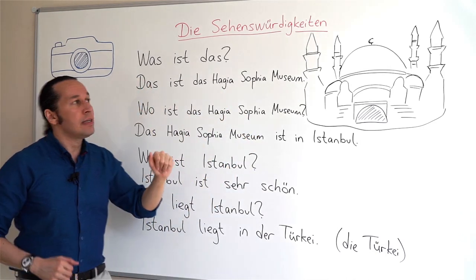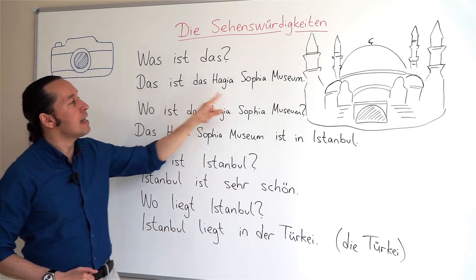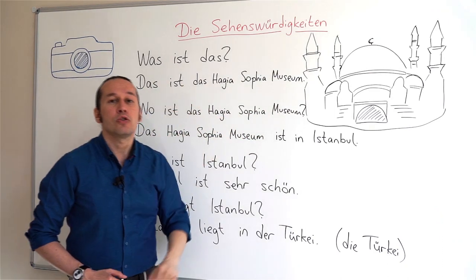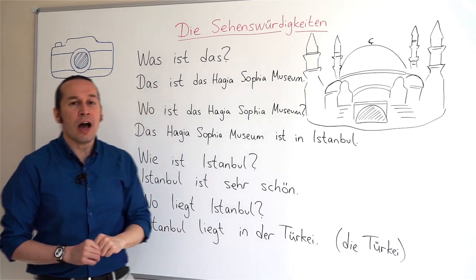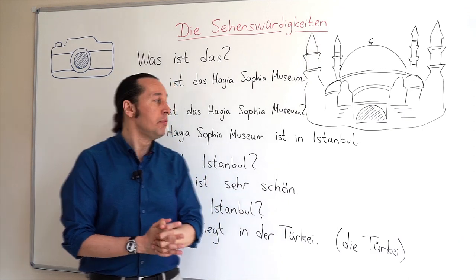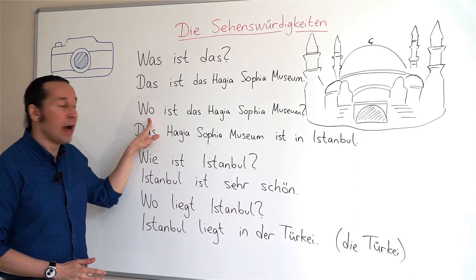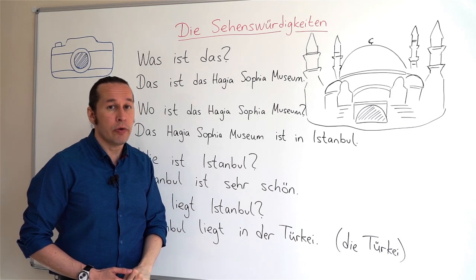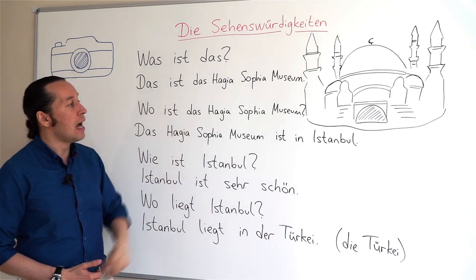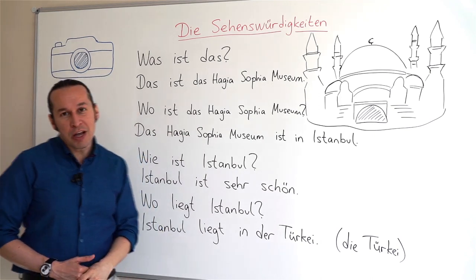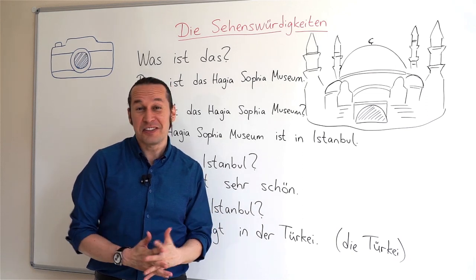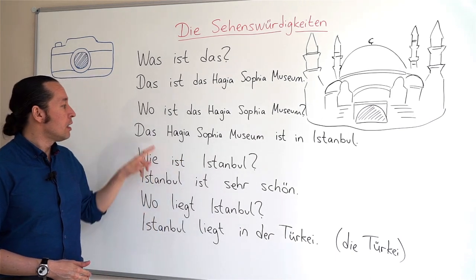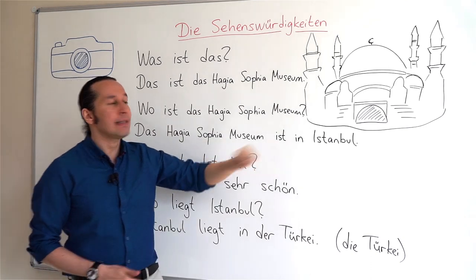So if I say 'this is the Hagia Sophia Museum', I'll say das ist das Hagia Sophia Museum. When I want to ask 'where is the Hagia Sophia Museum?' — wo ist das Hagia Sophia Museum? As I mentioned, it is in my hometown Istanbul. Das Hagia Sophia Museum ist in Istanbul.